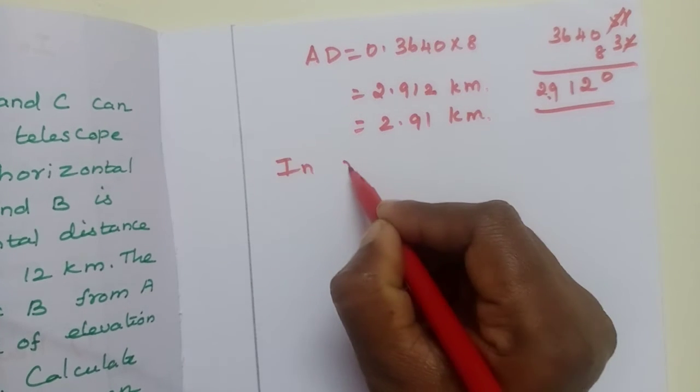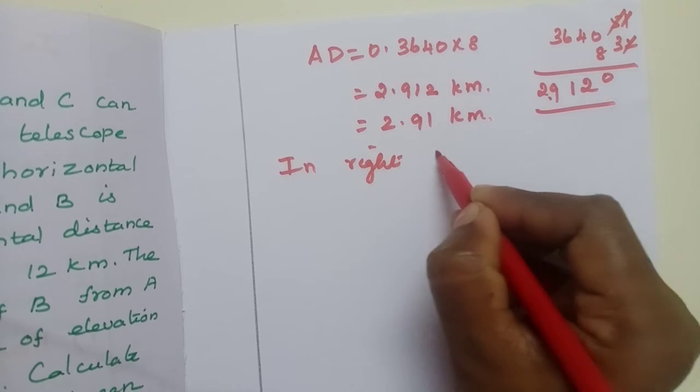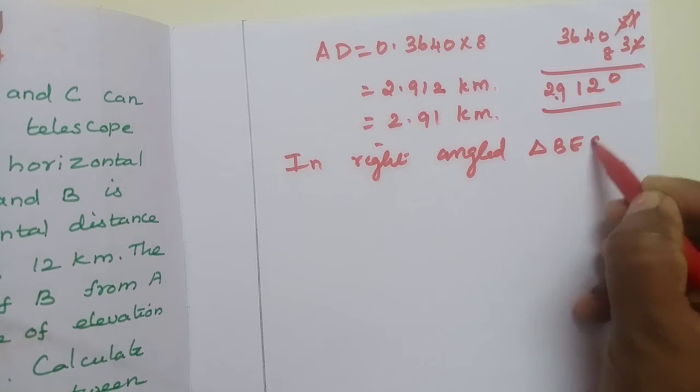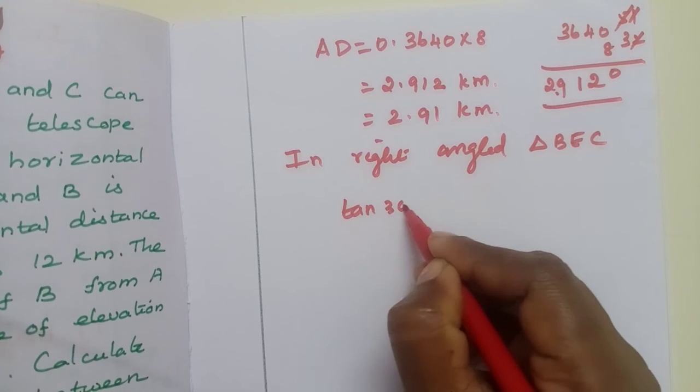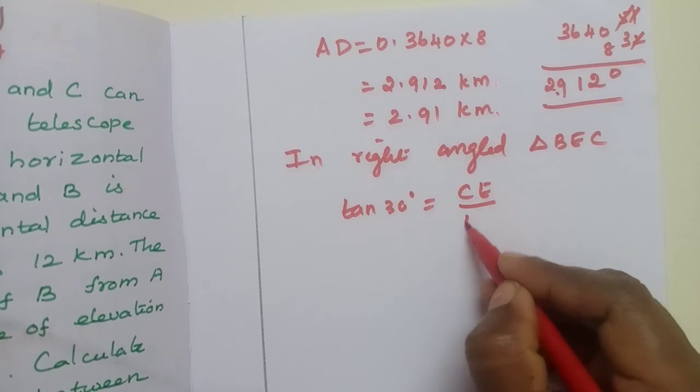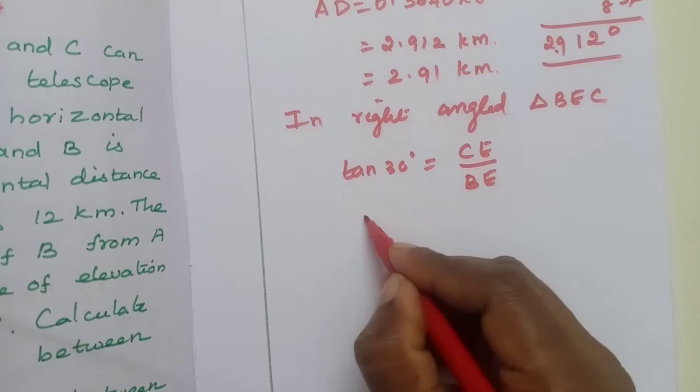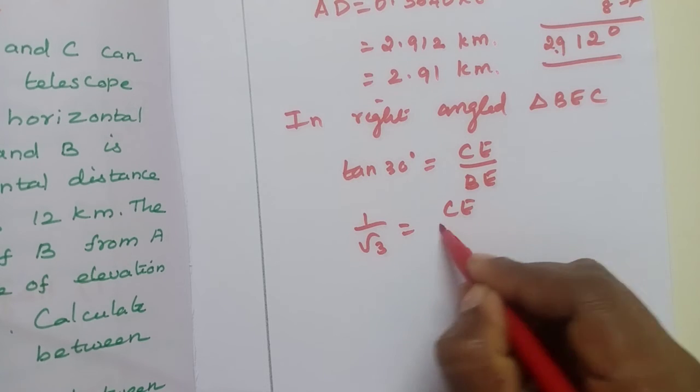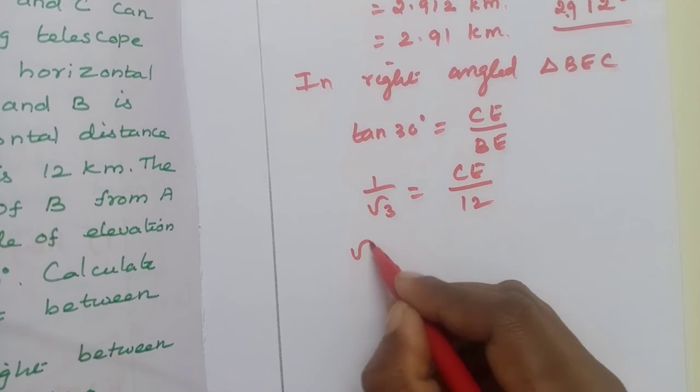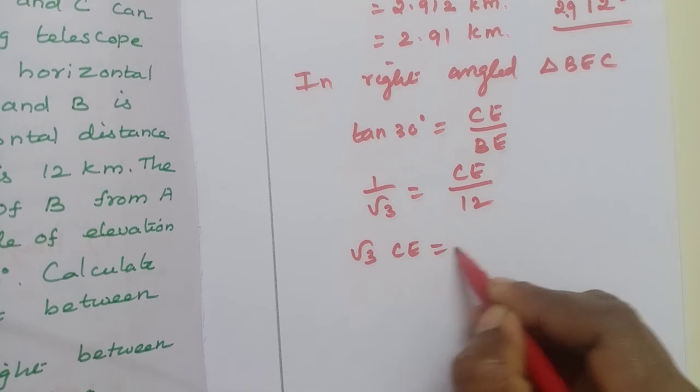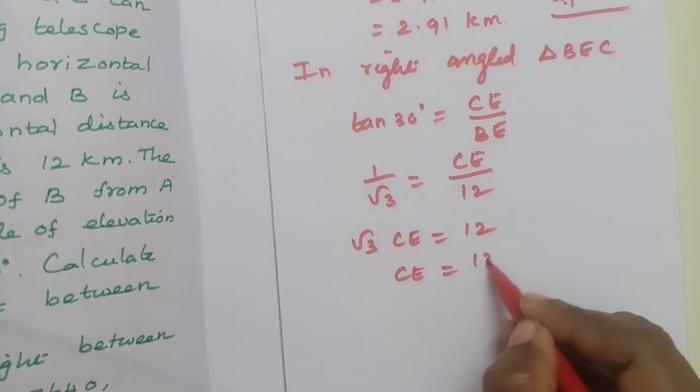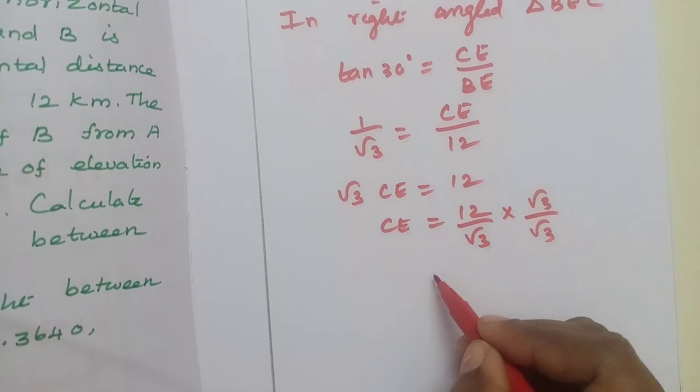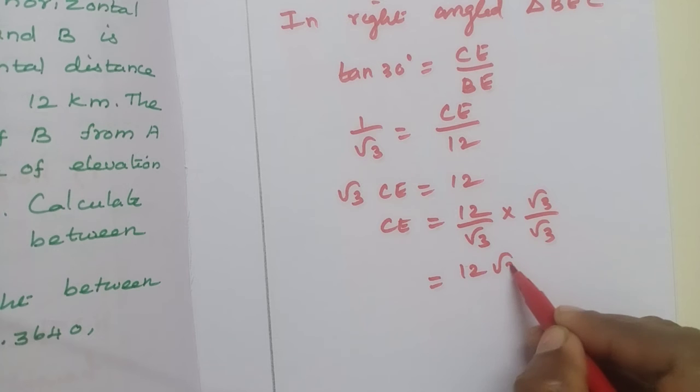In right angled triangle BEC, tan 30 degrees equals CE by BE. So 1 by root 3 equals CE by BE which is 12. Cross multiply, root 3 CE equals 12. CE equals 12 by root 3. Multiply and divide by root 3, so 12 root 3 by 3.